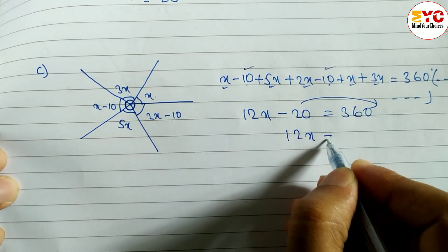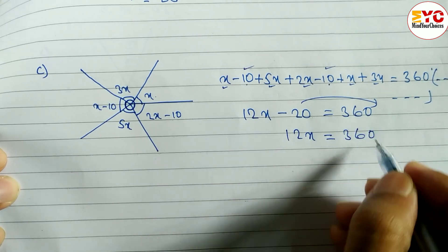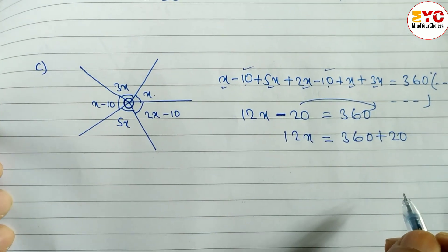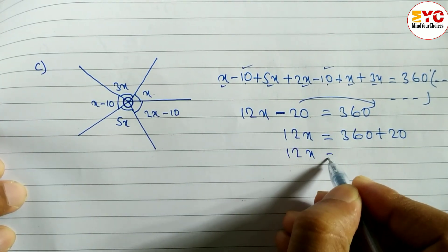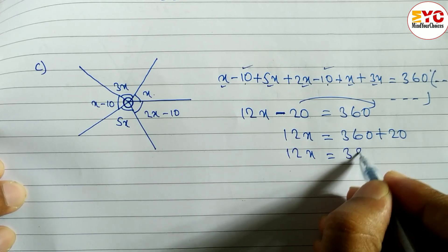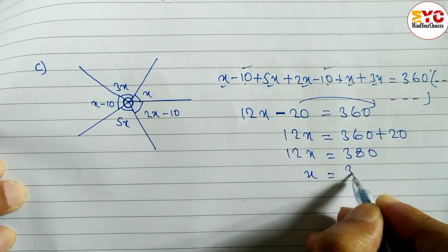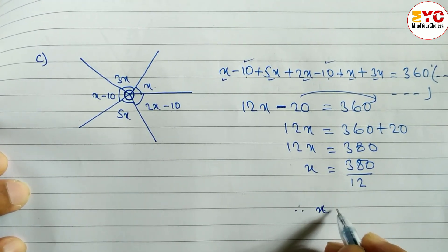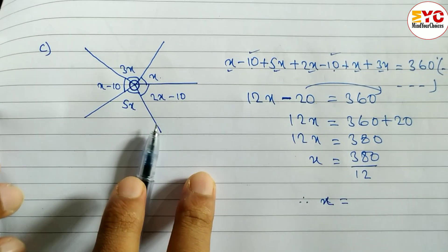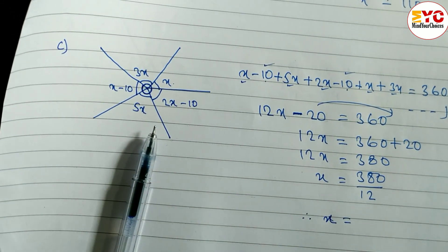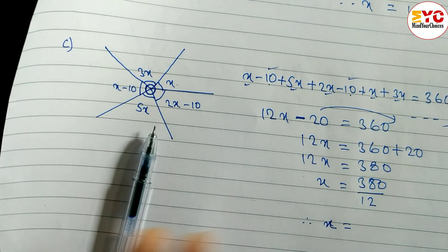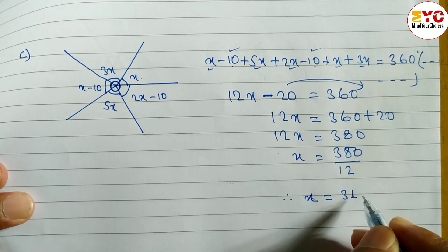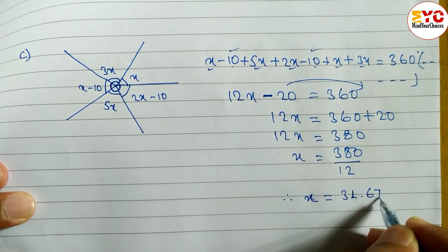We write 12x equals 360 plus 20. When you change sides, you change the sign, so 12x equals 380. Therefore x equals 380 divided by 12, which gives us x equals 31.67 degrees.